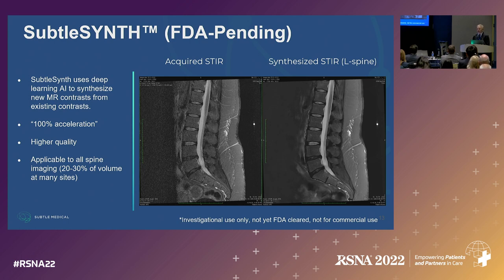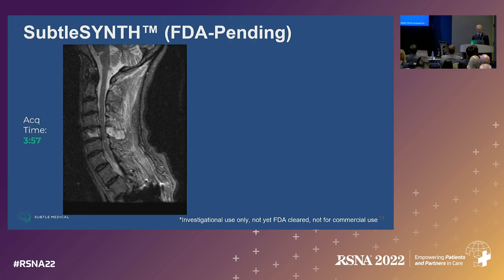This is applicable to all spine imaging, which is often 20 to 30% of volume at many sites. Here is an example: a STIR image in a patient with an expansile bone lesion. This was a four-minute scan on the scanner, with some hardware visible at the bottom.